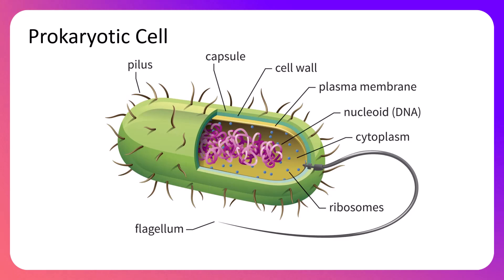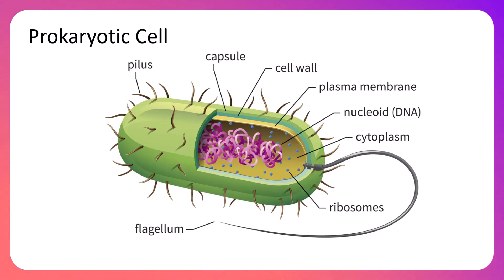When we dive into the actual structure, this image has pulled back the layers of the pilus, capsule, cell wall, and plasma membrane. Inside, there is still DNA in the form of a single circular chromosome, all jumbled up into the nucleoid region — it looks nucleus-like, but it is not an actual nucleus.